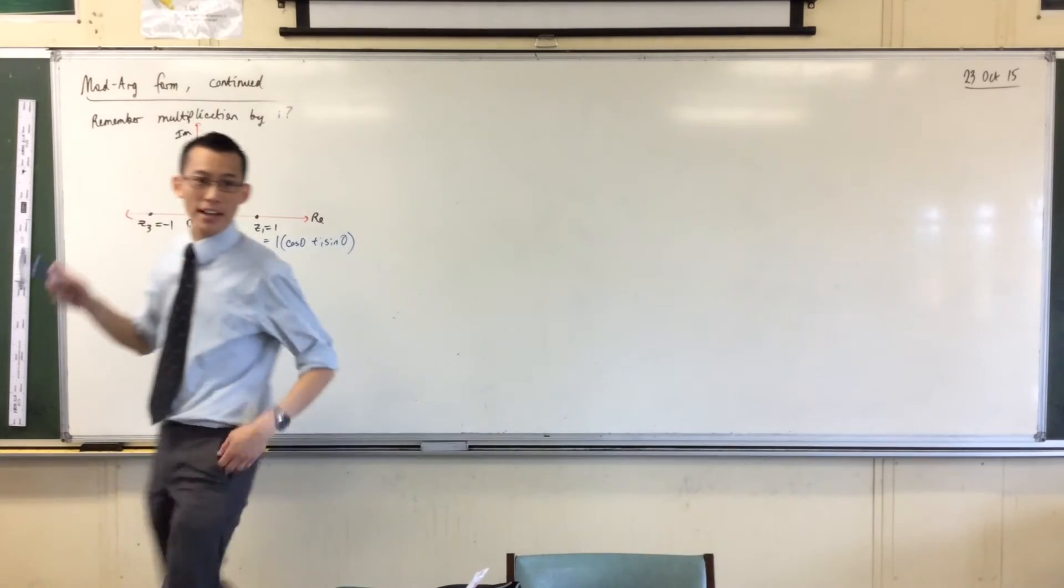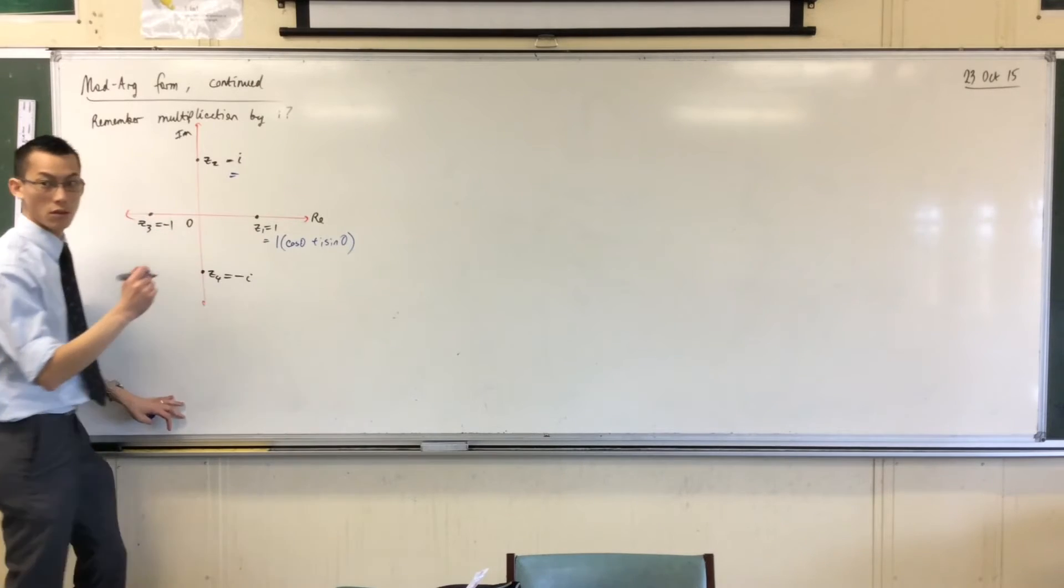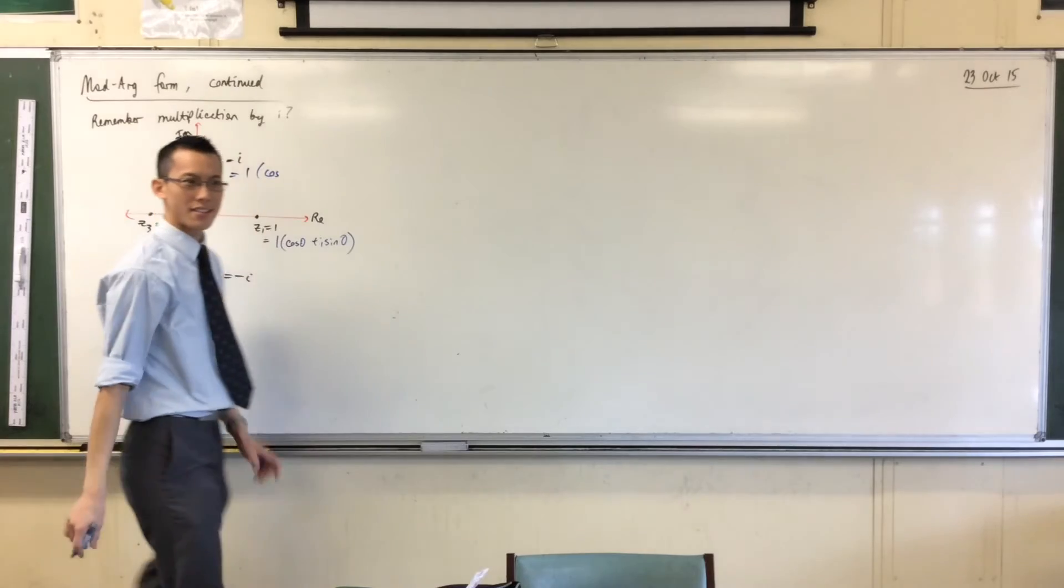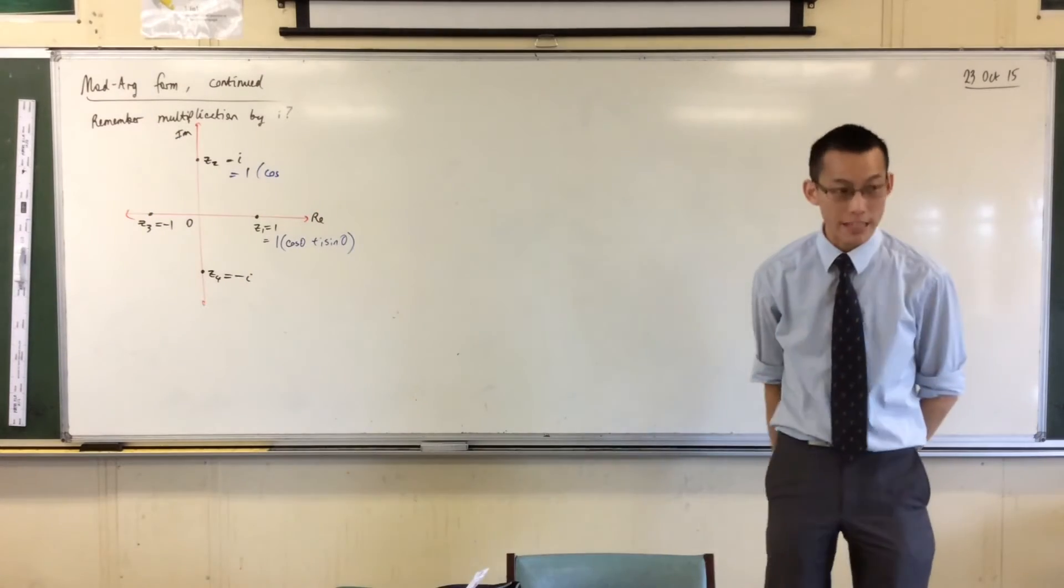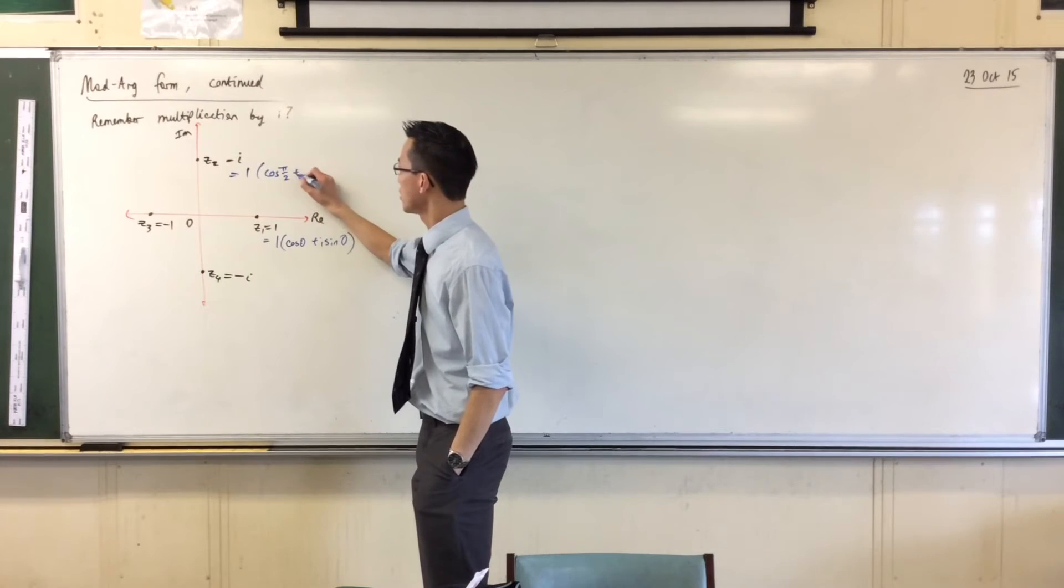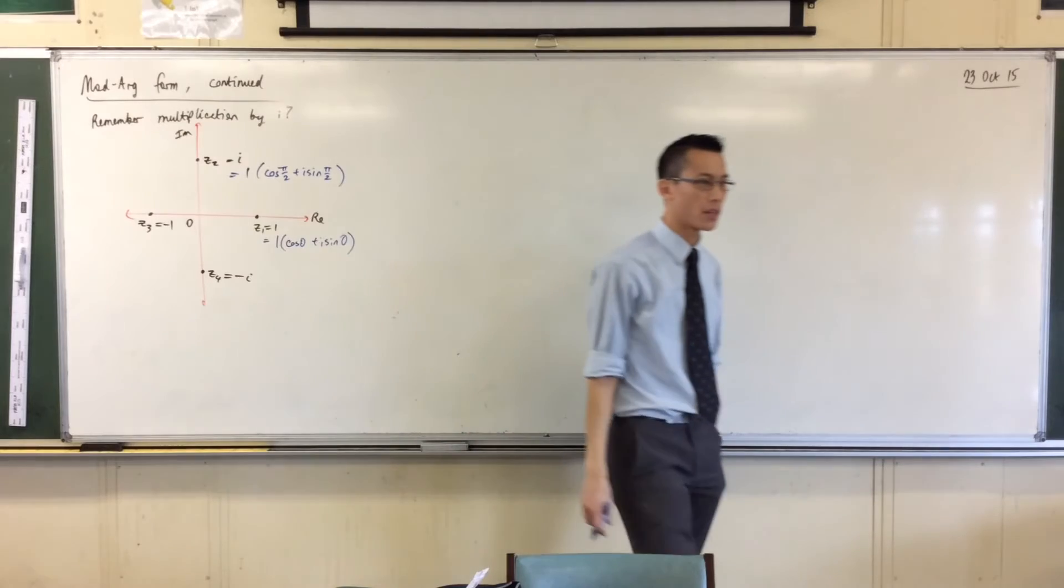All right, let's come back up here, okay? Let's go to Z2, right? Now, again, we've chosen an easy example. What's the modulus? One, still one, okay? What angle am I from the positive real axis? 90 degrees, which is pi on 2 radians, okay? So I've got cos pi on 2 plus i sine pi on 2, okay?